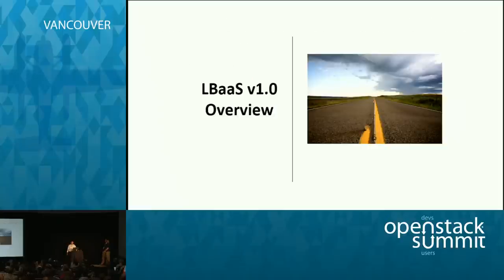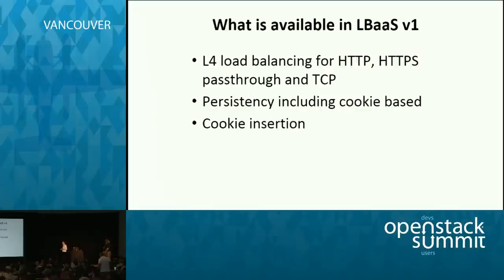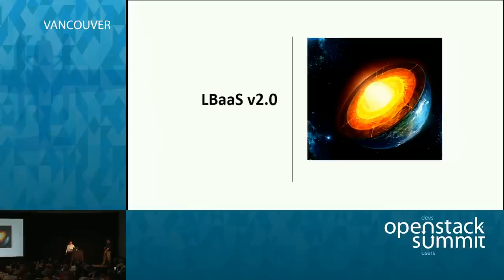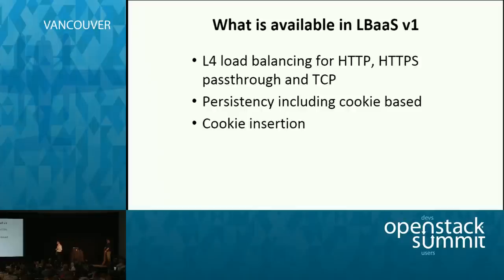LBaaS V1 was kind of basic. It allows an IP with a specific TCP port to be specified as a front end, and could either be load balancing HTTP, HTTPS, or simple TCP as a pass-through technology. For example, there was no HTTPS termination. There was persistency based on cookie and source IPs and cookie insertion. It was a good demonstration on how when specifying an API you can get a lot of adoption by multiple vendors — around 10 different back-end implementations for V1, so in that regard it was very successful.